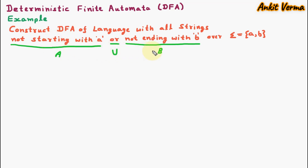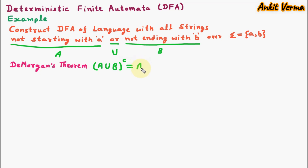The meaning is that this complete string is A union B. To solve this question I am using De Morgan's theorem, which says that whenever we have A union B and we are taking its complement, that will be equal to A complement intersection B complement. So for the given string — not starting with A or not ending with B, which is A union B — we are finding its complement, equal to A complement intersection B complement.